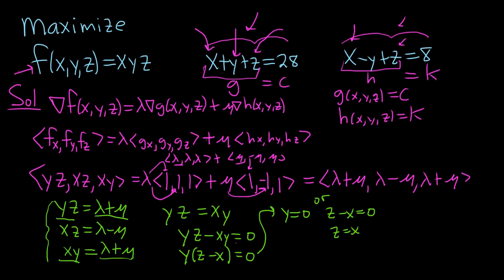Notice that y cannot be 0. Check this out. If y is 0, if you go to your constraints, you get x plus z equals 28. And if you go up here, you get x plus z equals 8. That means that 28 is equal to 8, which is impossible. So y cannot be 0. So z must be equal to x.